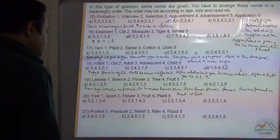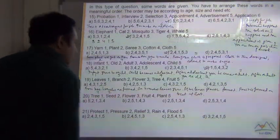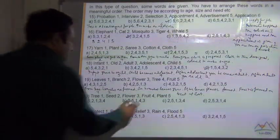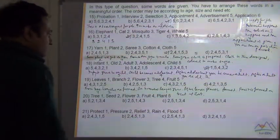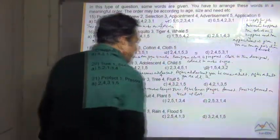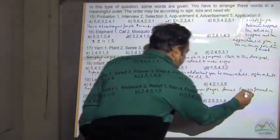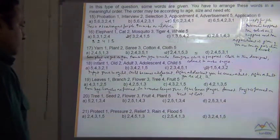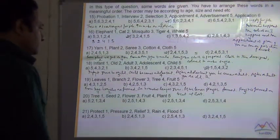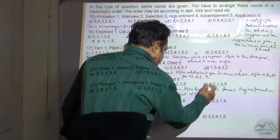So from tree, that is 4, we get branches, that is 2. And on branches we get leaves, that is 1. After leaves, flower is formed, that is 3. Fruit at the end, that is 5. So 4, 2, 1, 3, 5. Your answer is D.